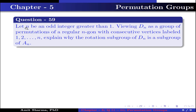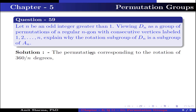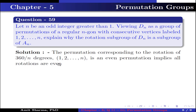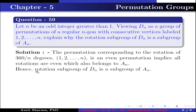Question number 59. Let n be an odd integer greater than 1; viewing Dn as a group of permutations of a regular n-gon with consecutive vertices labeled 1 to n, explain why the rotation subgroup of Dn is a subgroup of An. The permutation corresponding to the rotation 360/n degrees is an even permutation, which implies all rotations are even and also belong to An, since An is the group of even permutations. Hence the rotation subgroup of Dn is a subgroup of An.